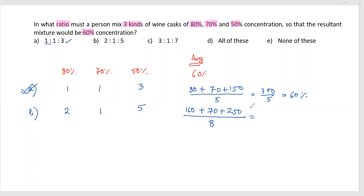Which comes to 160, 70, 250—that's 480 divided by 8, which equals 60%. So it is also giving us 60% concentration. What does this mean?